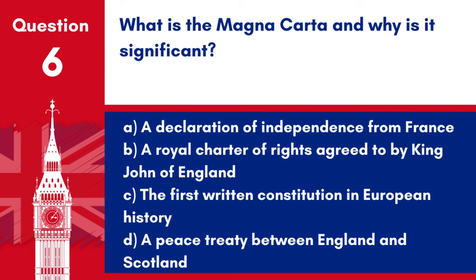Question 6. What is the Magna Carta and why is it significant? A. A Declaration of Independence from France. B. A Royal Charter of Rights agreed to by King John of England. C. The first written constitution in European history. D. A peace treaty between England and Scotland. Answer: B. A Royal Charter of Rights agreed to by King John of England. The Magna Carta is significant as it was a Royal Charter of Rights that limited the power of the monarch and laid the foundation for modern democracy.